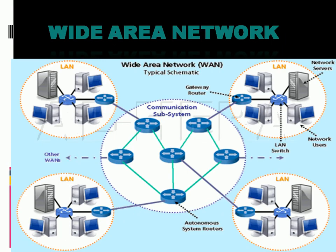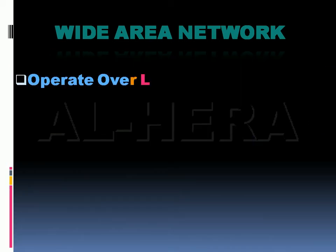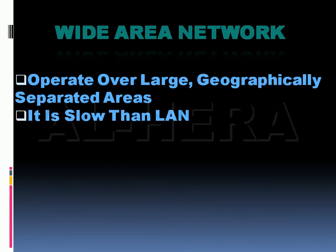Moving on to the Wide Area Network. The Wide Area Network is broader than the Metropolitan Area Network. Wide Area Networks operate over large, geographically separated areas. A WAN is slower than a LAN. It connects widely separated geographic locations.